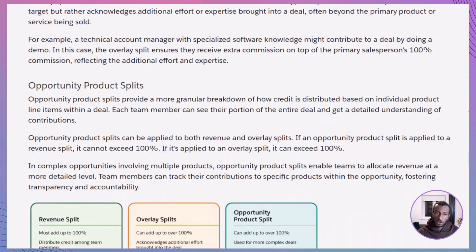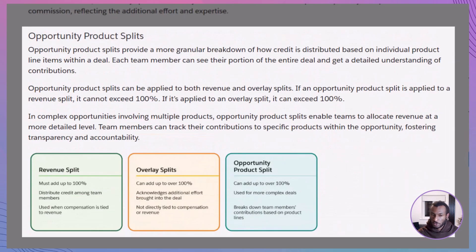Then we have opportunity product splits, which dive deeper by breaking down credit for individual products within a deal. This level of detail can be applied to both revenue and overlay splits, to ensure everyone's effort on specific product lines is recognized.